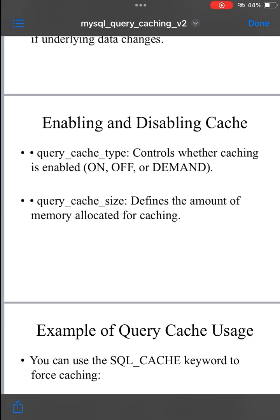Disabling and enabling query cache. In MySQL, the query cache can be enabled or disabled with the following system variables. Query cache type controls whether query caching is used. It can be set to 0 (off), which disables query caching entirely.